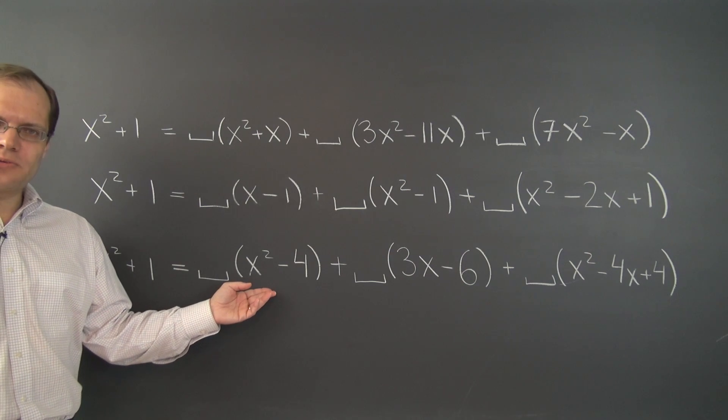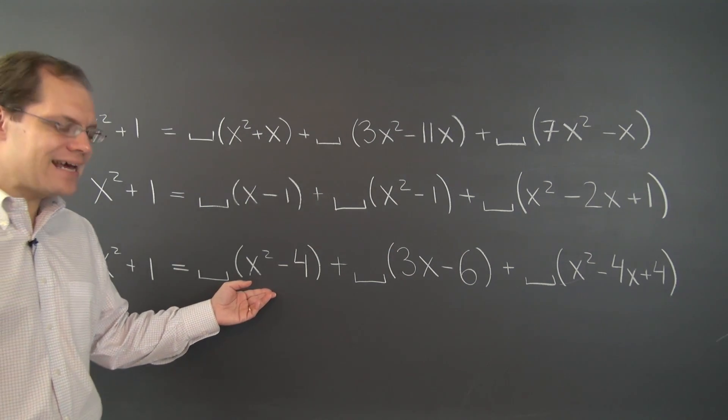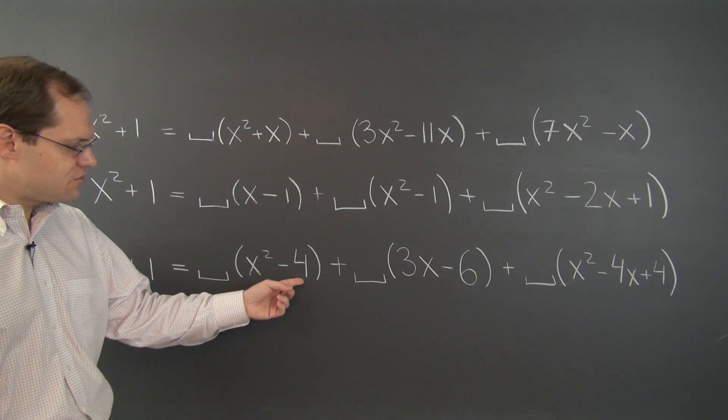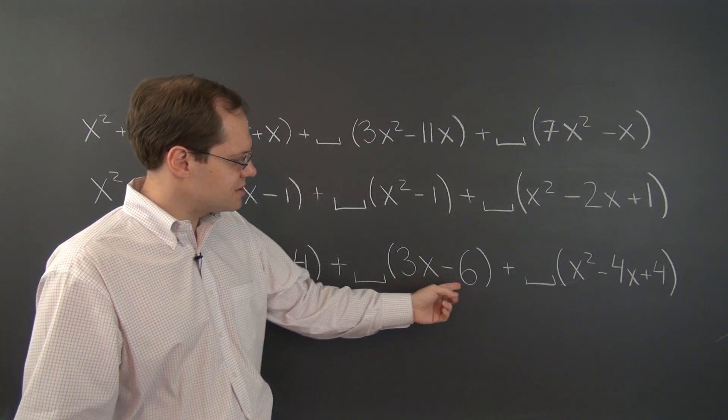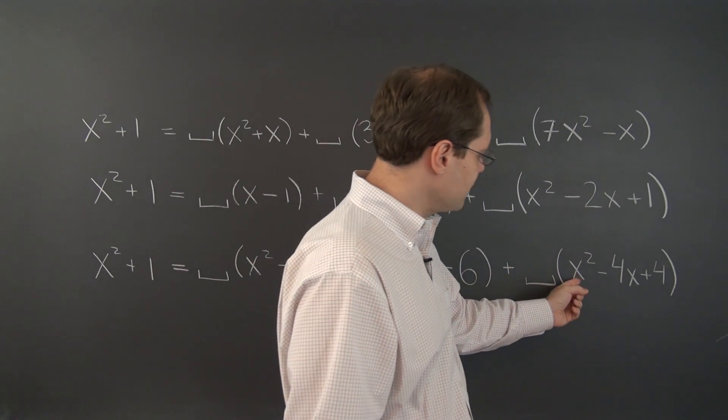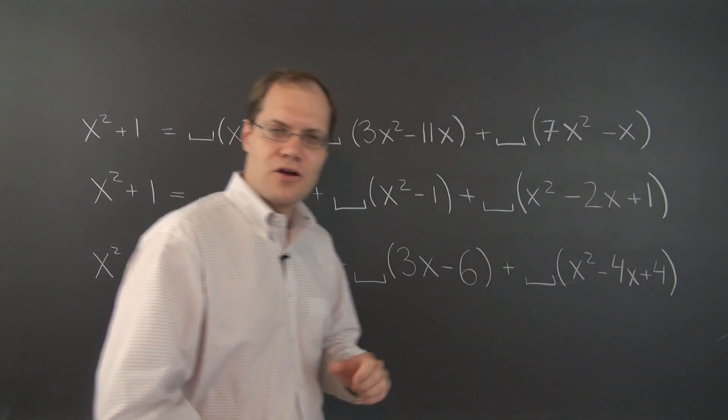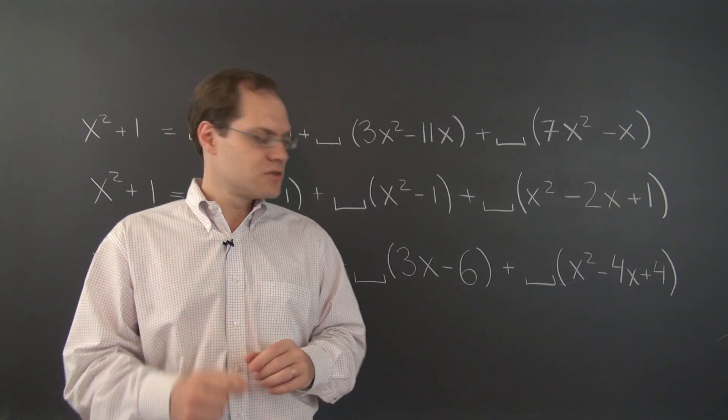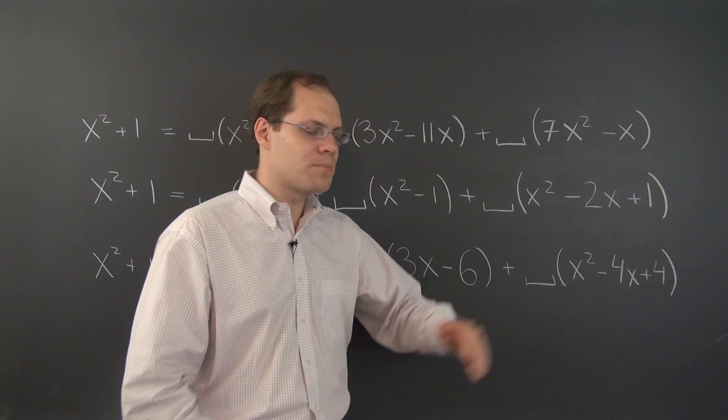What these decomposition polynomials have in common is that at x equal 2 they equal 0. 4 minus 4, plug in 2 here, 6 minus 6, and finally 4 minus 8 plus 4. In other words, x equals 2 is a root of each one of these polynomials.